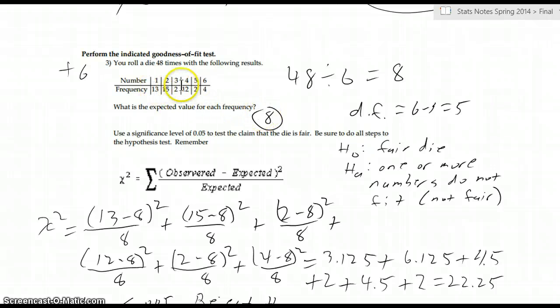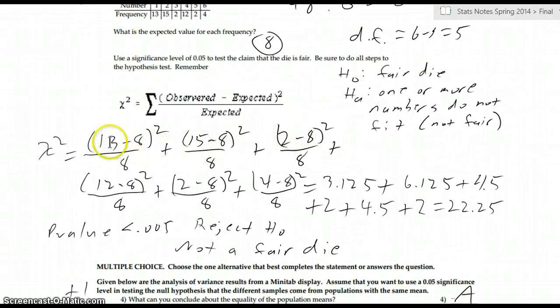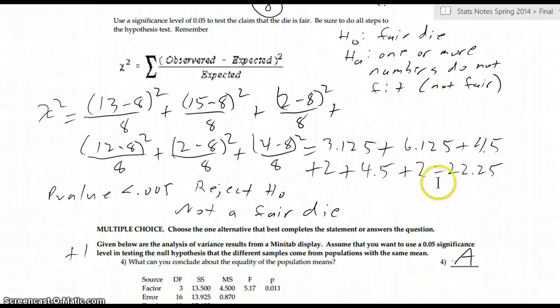We'd expect 8 to be in all these frequencies, but it's not. So we calculate the chi-squared statistic here, and we find the difference between each frequency compared to 8. Square those and divide it by the expected, and we do that for all 6. And here's that calculation. So we get a chi-squared of 22.25. And our degrees of freedom, there's 6 categories. 6 minus 1 is 5. So 5 degrees of freedom. If you look up 22.25 in the chi-squared table, again, very, very small. P-value is less than 0.005. We reject the null. This shows us that it's not a fair die.